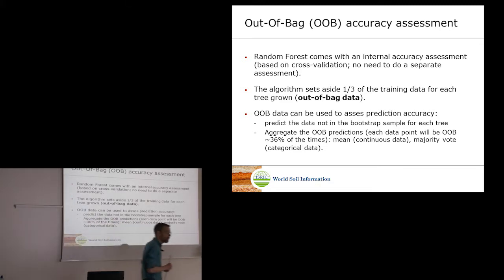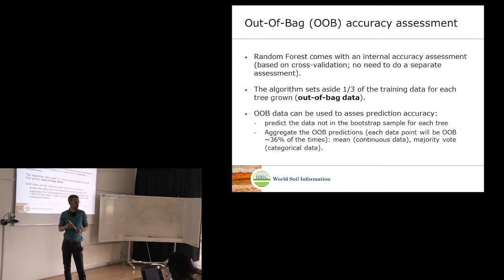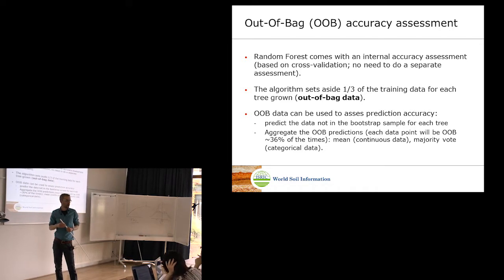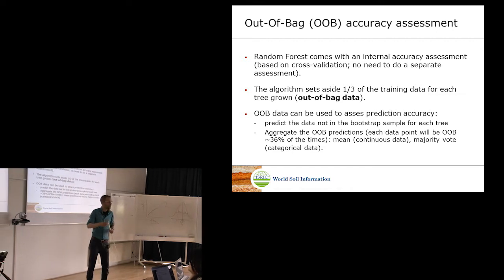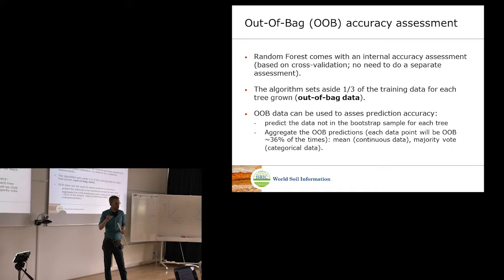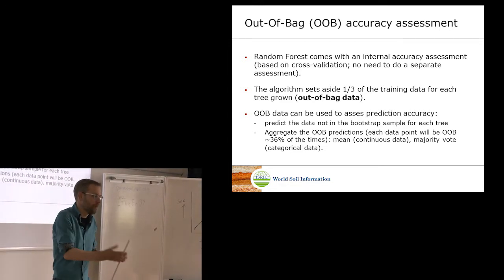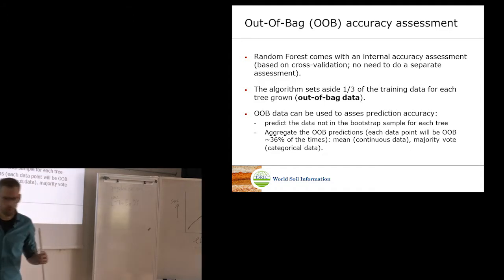A student asked whether internal cross-validation is also performed on the two-thirds training subset. The answer is no — it's not necessary, because the out-of-bag mechanism already serves as the cross-validation. The tree is simply grown as large as possible on the two-thirds training data. The OOB validation is all done automatically by the algorithm.